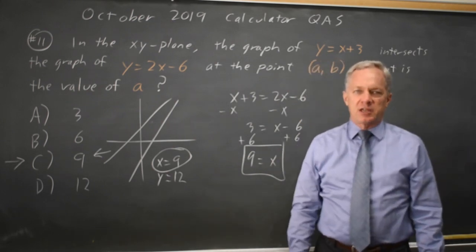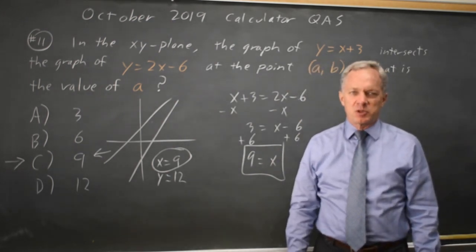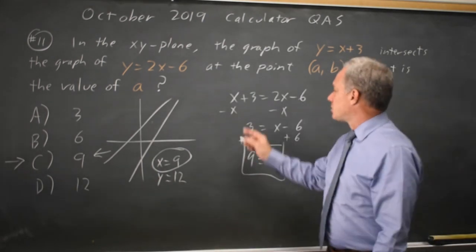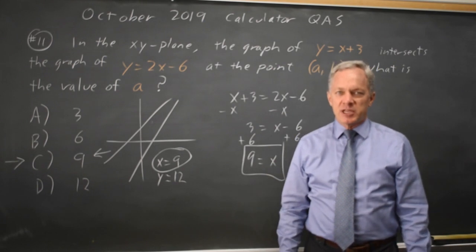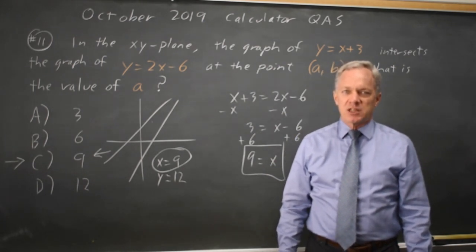When you're solving equations by hand, make sure you always do the same to both sides of the equation. So I subtracted x from both sides, and then I added 6 to both sides. And come back soon for my next video. With math, there's always more.